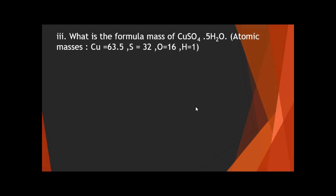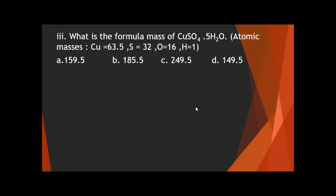Question 3: what is the formula mass of pentahydrated copper sulfate? The atomic masses given are: copper 63.5, sulfur 32, oxygen 16, and hydrogen 1. You already know how to calculate formula masses of compounds. The options are: A) 159.5, B) 185.5, C) 249.5, D) 149.5.